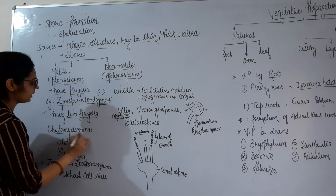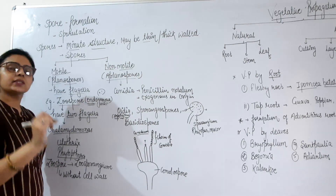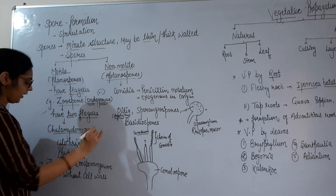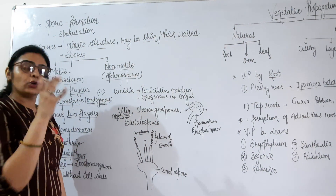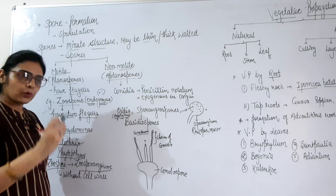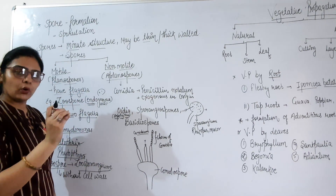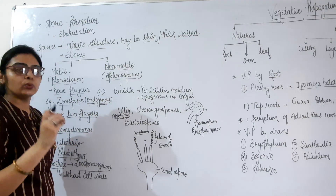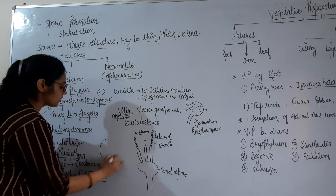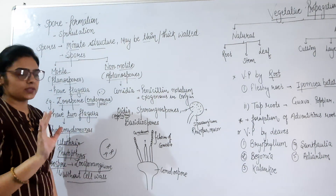Examples of organisms that reproduce asexually with the help of zoospores are Chlamydomonas, Ulothrix, and Phytophthora. The structure in which the zoospore is created in the parent body is called the zoosporangium. The zoosporangium does not have a cell wall; it is a simple structure within which zoospores are formed.